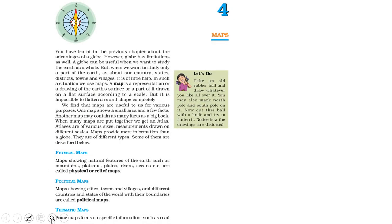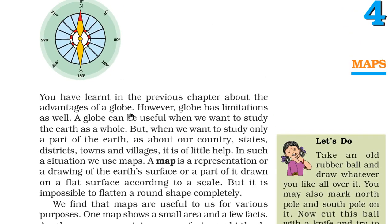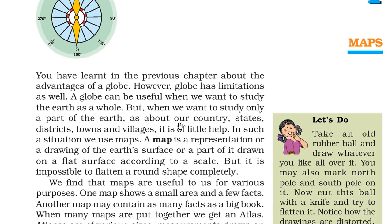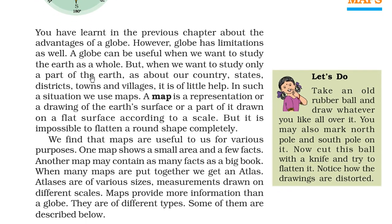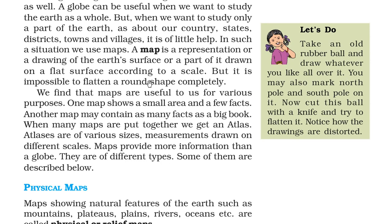In the previous discussion, we saw the advantages of a globe. A globe has certain limitations also — it is a miniature form to represent our earth. A globe can be useful when we want to study the earth as a whole, but when we want to study only a part of it, say a country, states, district, town or villages, then the globe is of little help. In this scenario, we use maps.